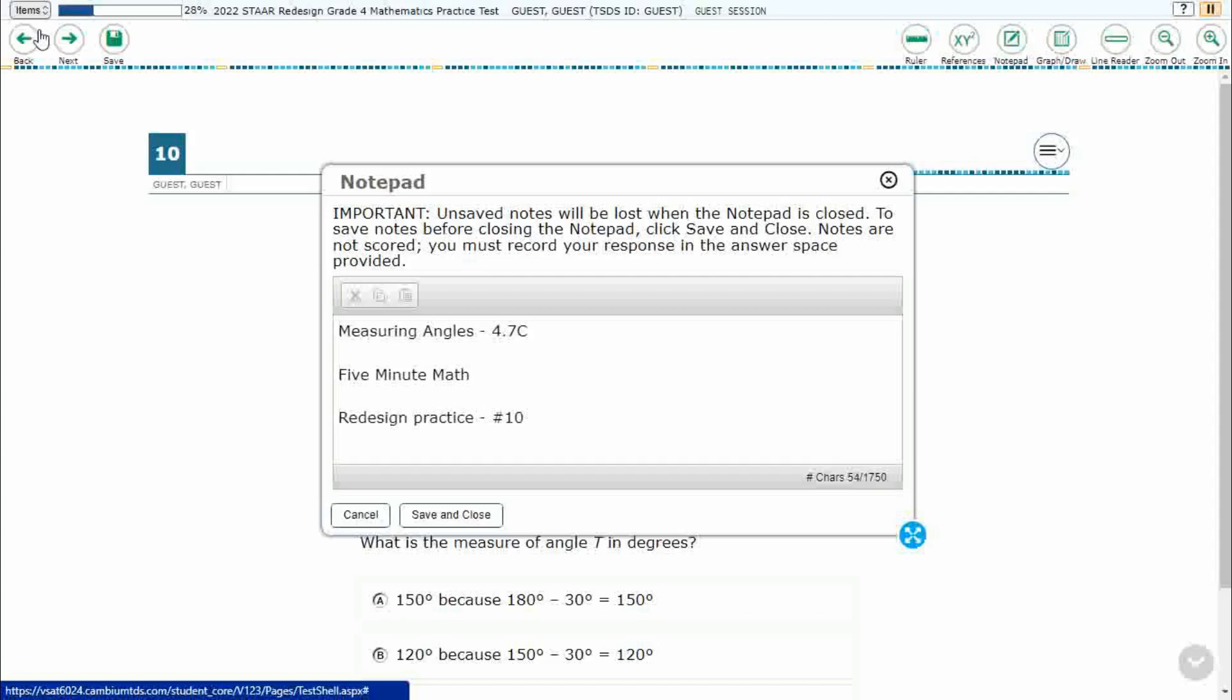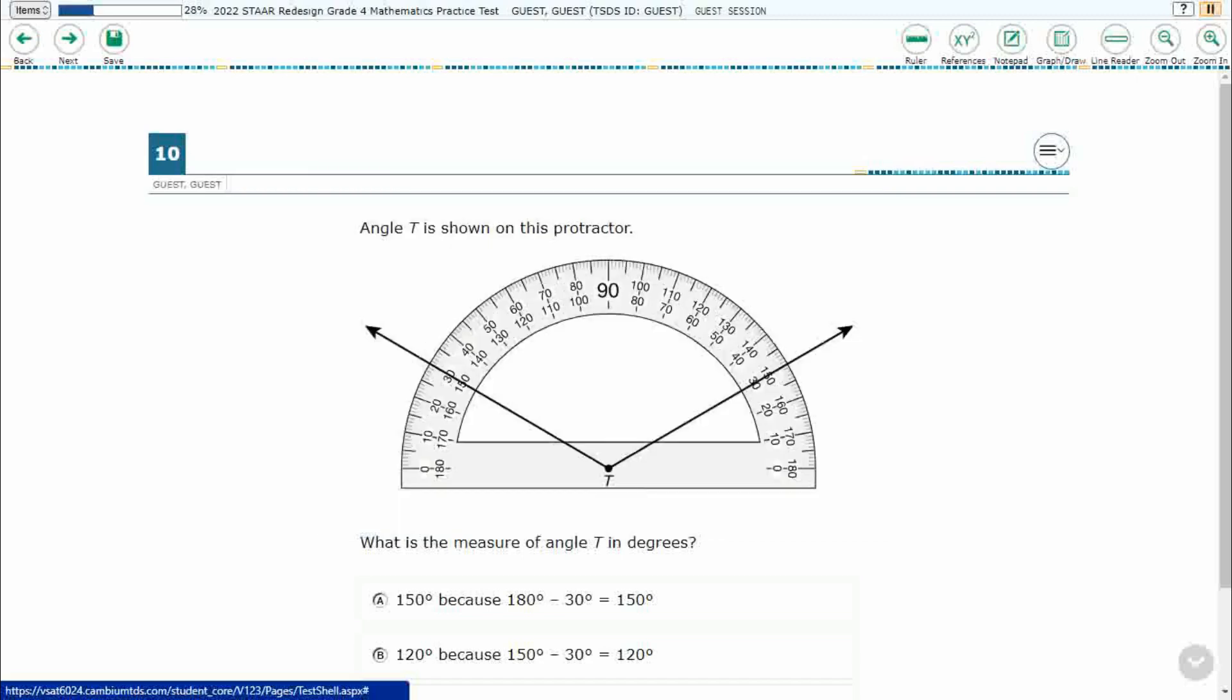Hello and welcome to 5-Minute Math. Today we are looking at the fourth grade concept of measuring angles. This is standard 4.7c in the great state of Texas and we are using item number 10 of the redesign practice online star test.